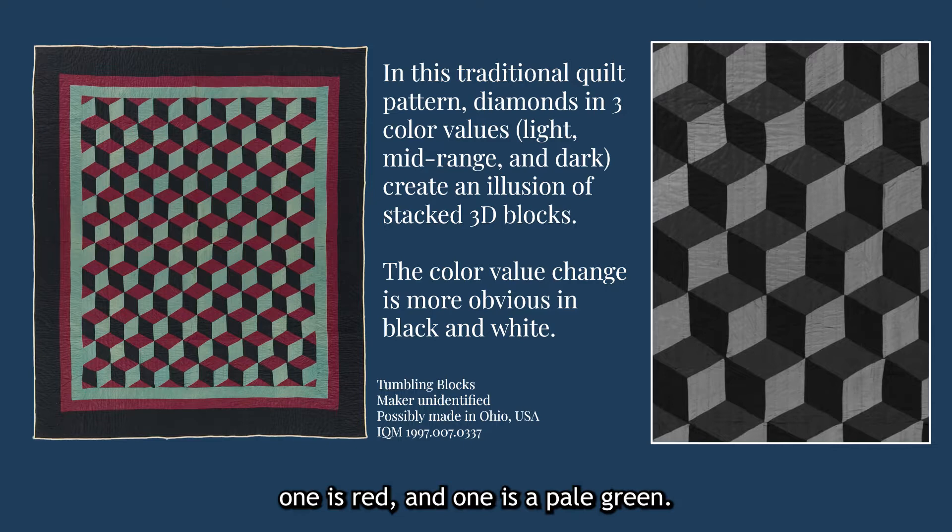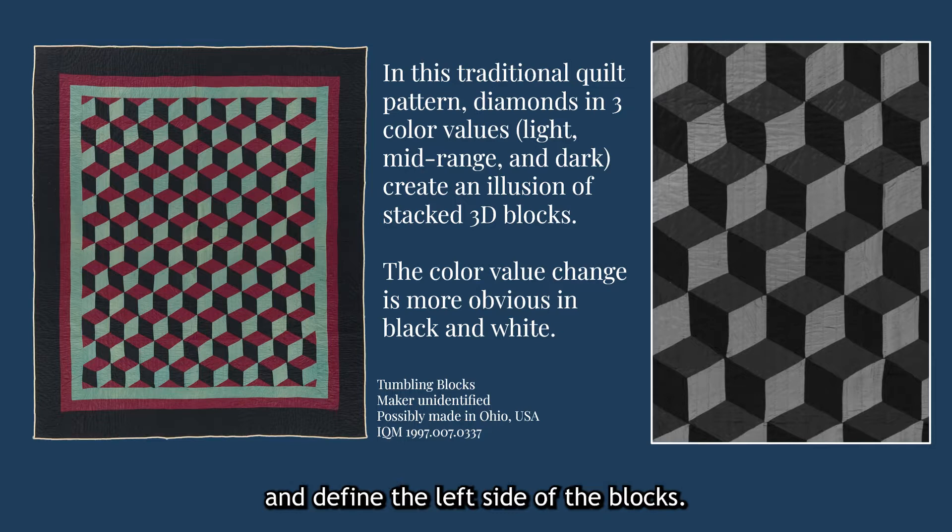But if you convert the quilt to grayscale, you can see that each of these colors also has a different color value. The black diamonds are the darkest and define the left side of the blocks. The red diamonds create a middle value that defines the top of each block, and the green diamond's value draws the eye with its lightness, defining the right side of each tumbling block.